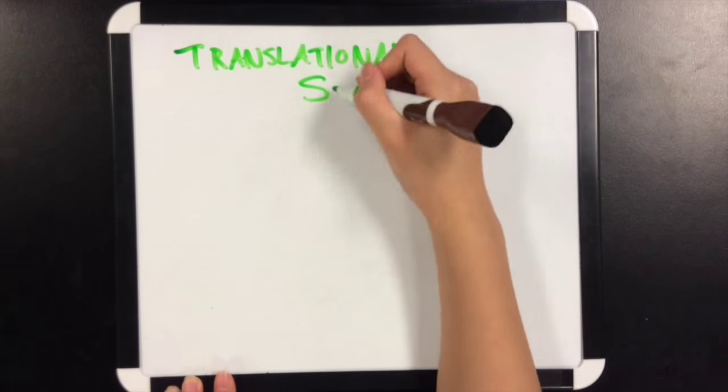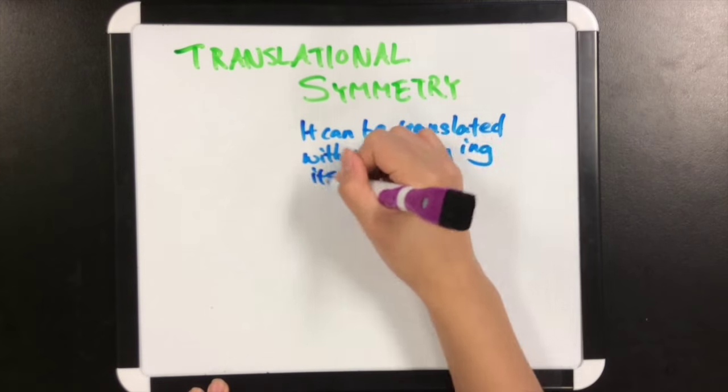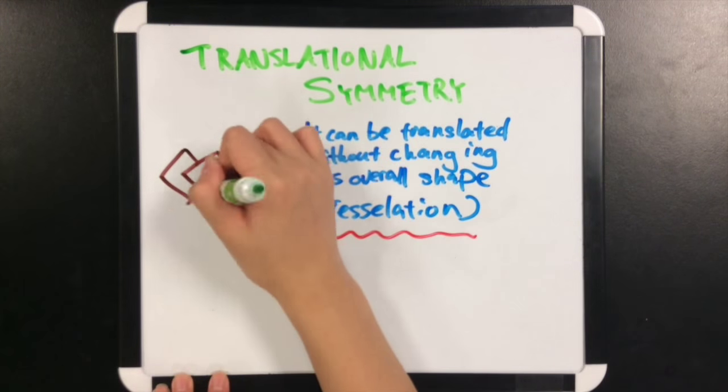and translational symmetry. An object that has translational symmetry can be translated without changing its overall shape.